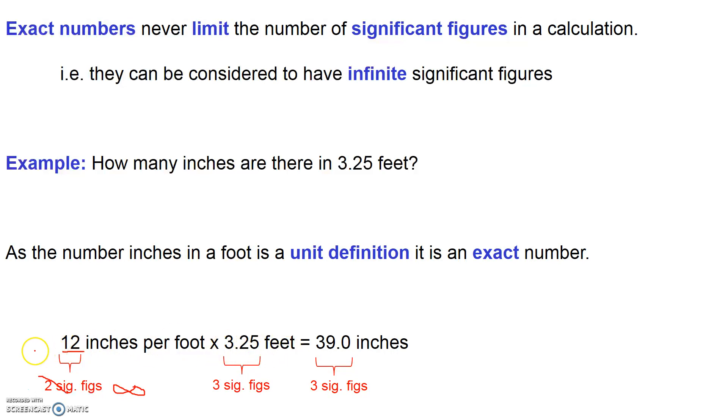When I do the math here, 12 times 3.25 feet, I don't want to round this off to two significant figures. I want to round this off to three significant figures, because this guy has infinity significant figures, this guy has three significant figures, and three is clearly smaller than infinity.